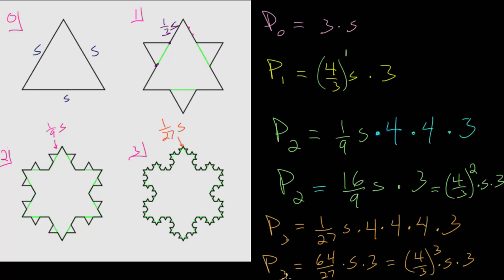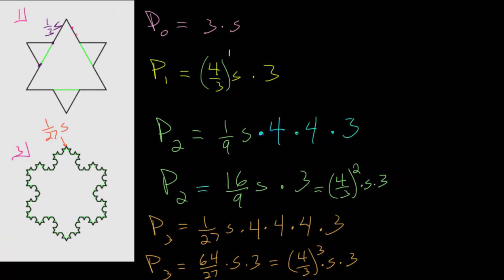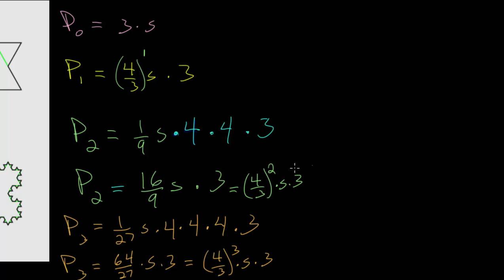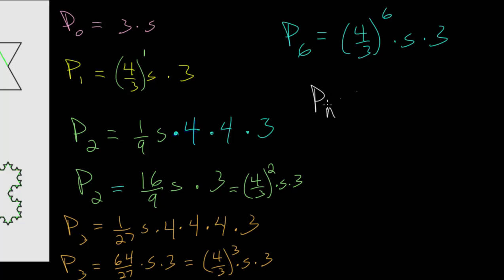We can now generalize this pattern. Whatever step we're on, to find the perimeter we raise four-thirds to that particular power, then multiply by the original side length S and then by three. So the general formula is Pn equals four-thirds to the nth power, times S, times three. For example, P6 would be four-thirds to the sixth power times S times three, which would be tedious to draw out but follows straightforwardly from the logic of the first few steps.